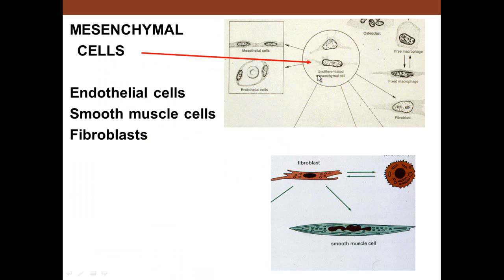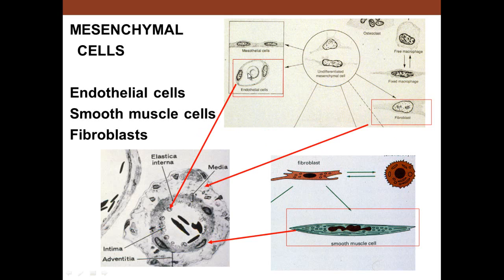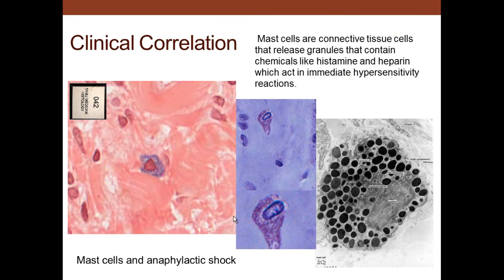Mesothelial cells produce fibroblasts, endothelial cells, and smooth muscle cells—all derived from undifferentiated mesenchymal cells. This is important because mesenchymal cells give rise to all three cell types needed to make a blood vessel: endothelium, fibroblasts, and smooth muscle. This makes mesenchymal cells the precursor cells for blood vessel growth during wound healing or angiogenesis.